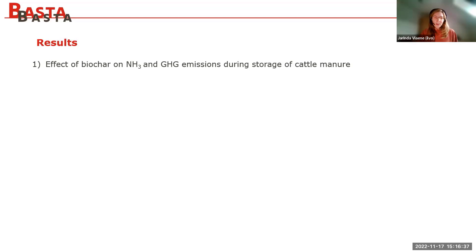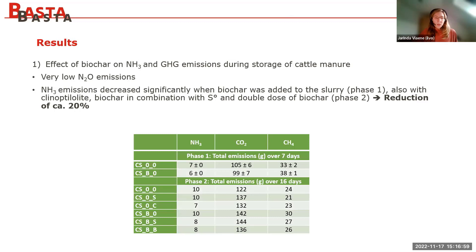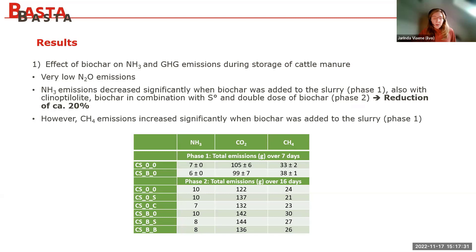Was there an effect of biochar on NH3 and greenhouse gas emissions during storage? For N2O there were very low emissions. For NH3, we saw a significant decrease when biochar was added to the cattle slurry compared to without biochar. In the second phase, when we added clinoptilolite, biochar combined with elemental sulfur, and a double dose of biochar, we also saw a reduction of approximately 20% compared to cattle slurry without biochar. For CO2 there were no significant differences. However, methane emissions increased significantly during the first phase when biochar was added.